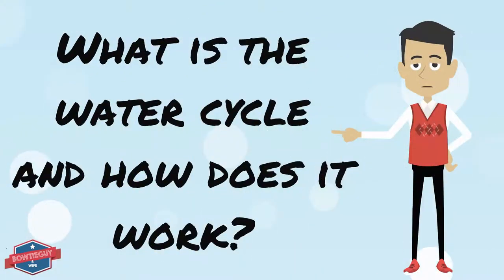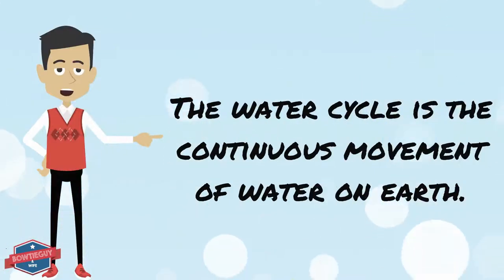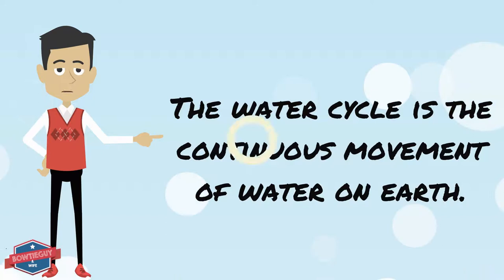What is the water cycle, and how does it work? The water cycle is the continuous movement of water in its many different forms on Earth.